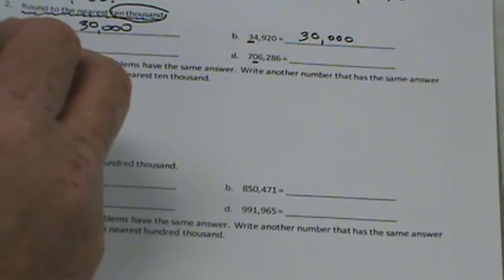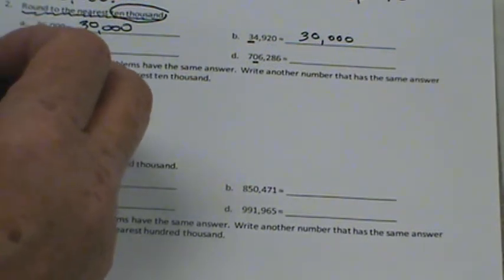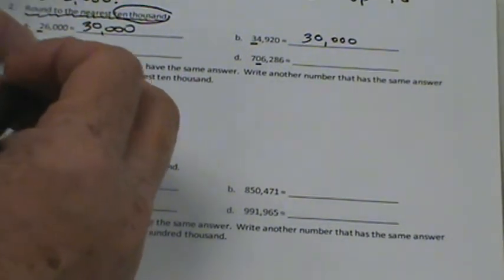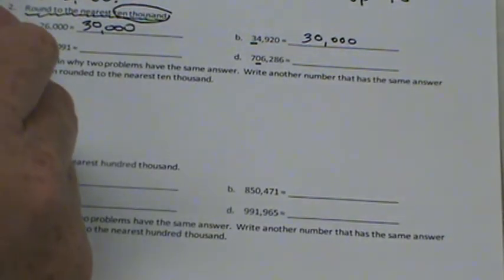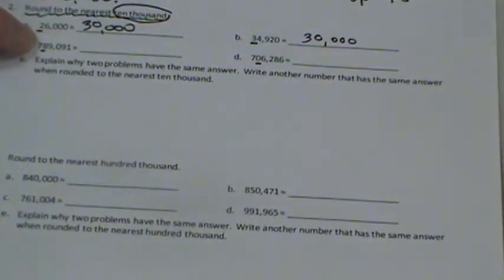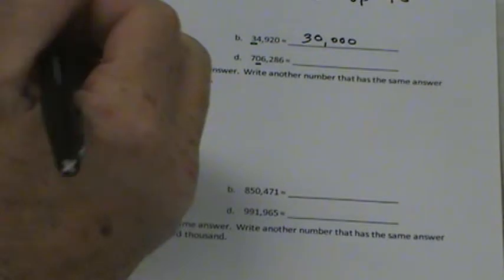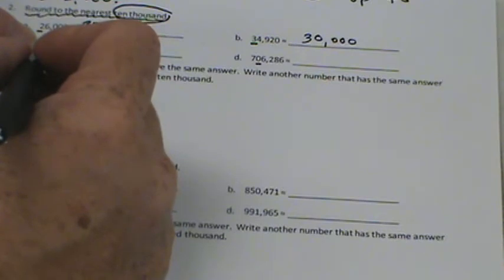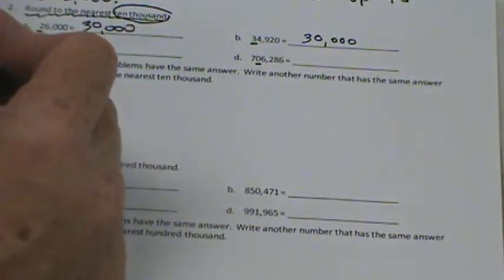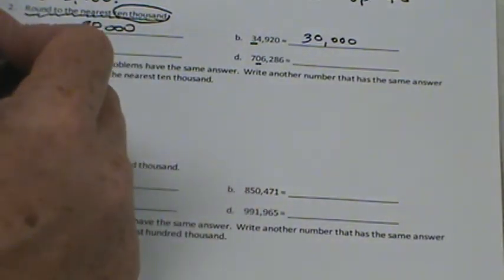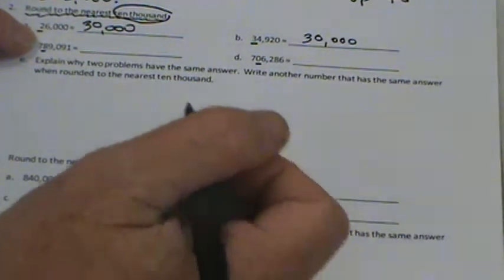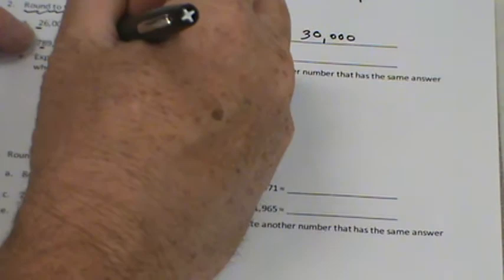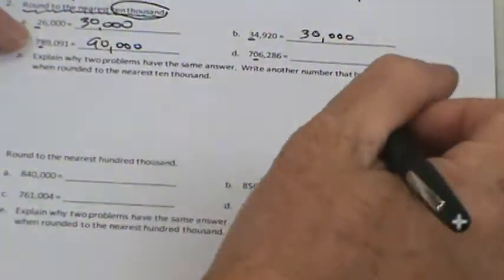How about over here? 789,091. Now, we know this isn't going to change. This is either going to remain the same or go up to 9. Is 89,091 closer to 80,000 or 90,000? Because we're rounding to the nearest 10,000. 89 is pretty darn close to 90, I think you would agree with me. So we would round up to 790,000.